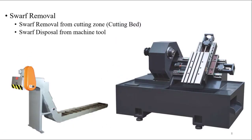The next topic is swarf removal. What is swarf removal? It means whatever waste you have produced — whatever the cutting material that you have cut — how to remove this from the machine. There are two ways: swarf removal from the cutting zone and swarf disposal from the machine. You can see the CNC bed is slanted. Whenever cutting takes place on this surface, the waste falls onto the slanted bed and because of the slant, it falls into this area and directly moves out of the machine. This is called swarf removal from the cutting zone.